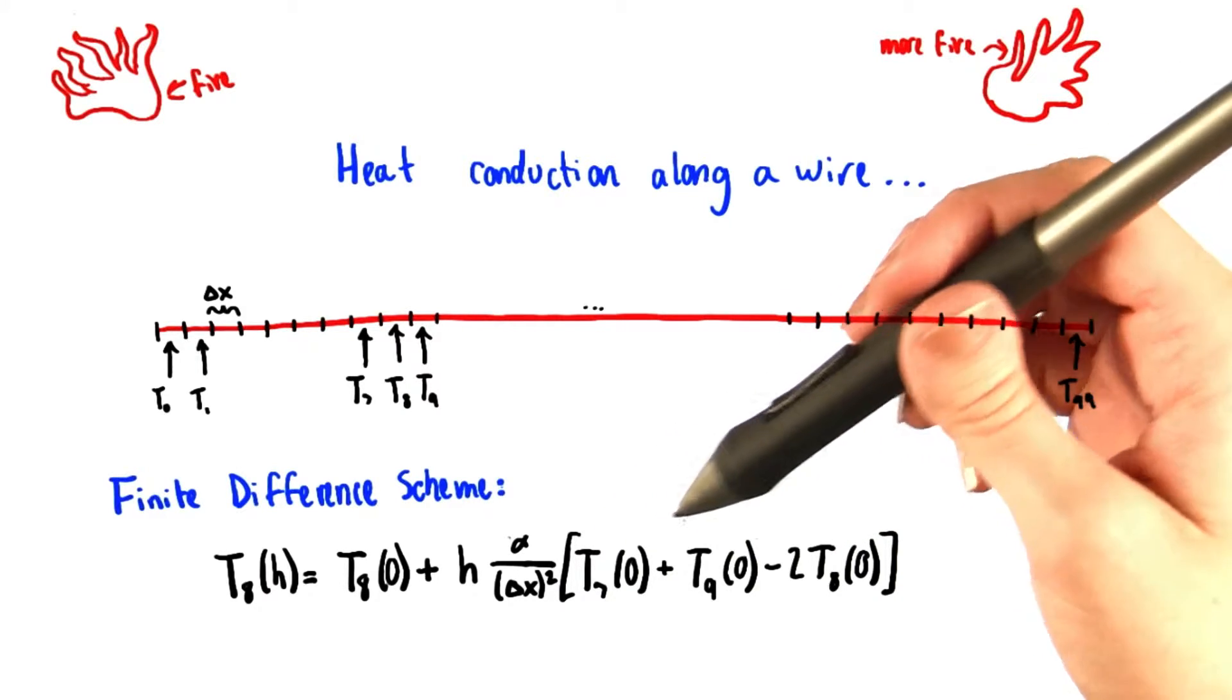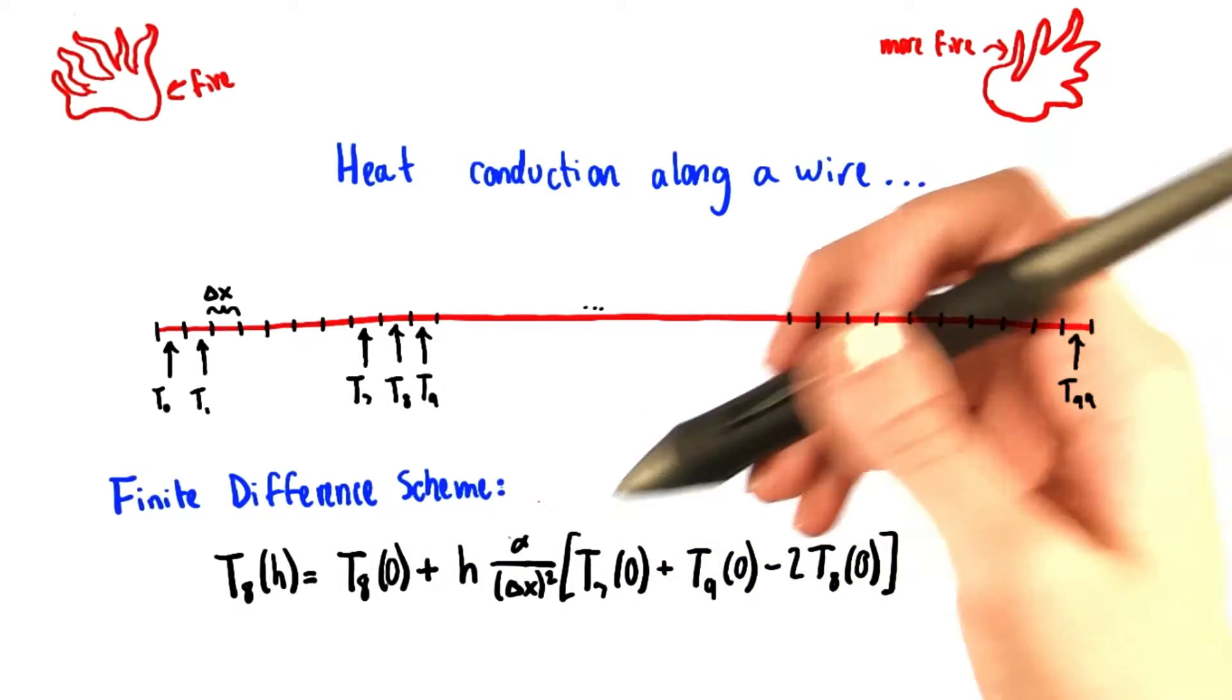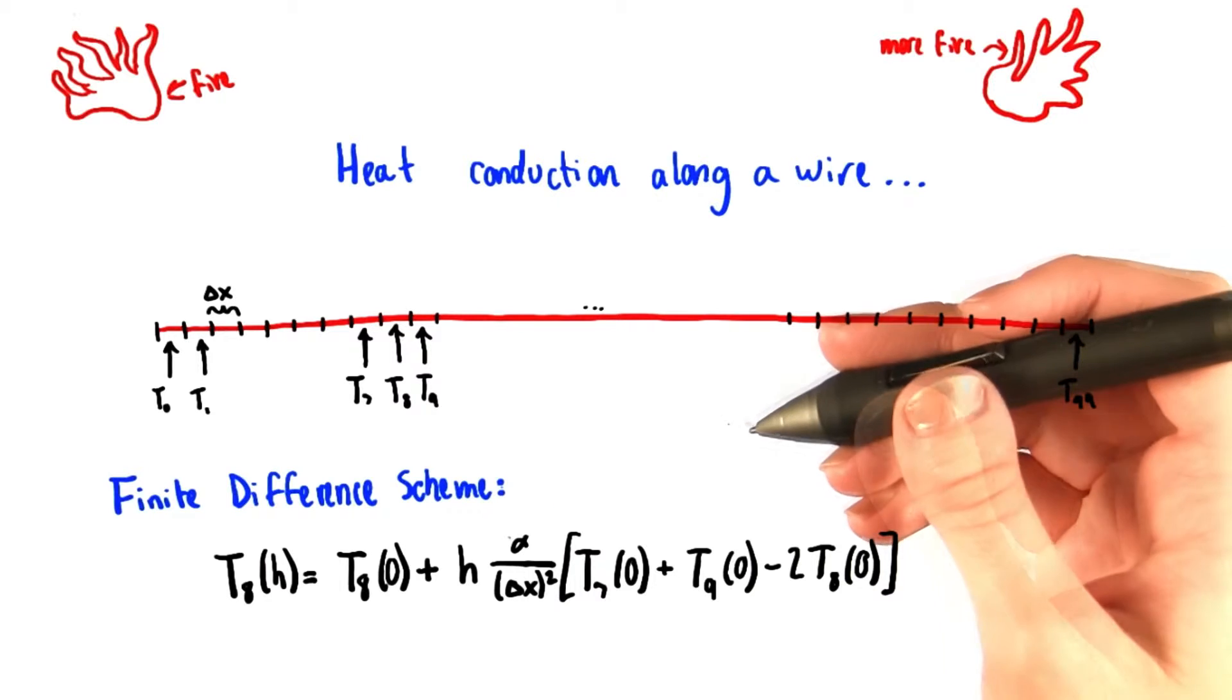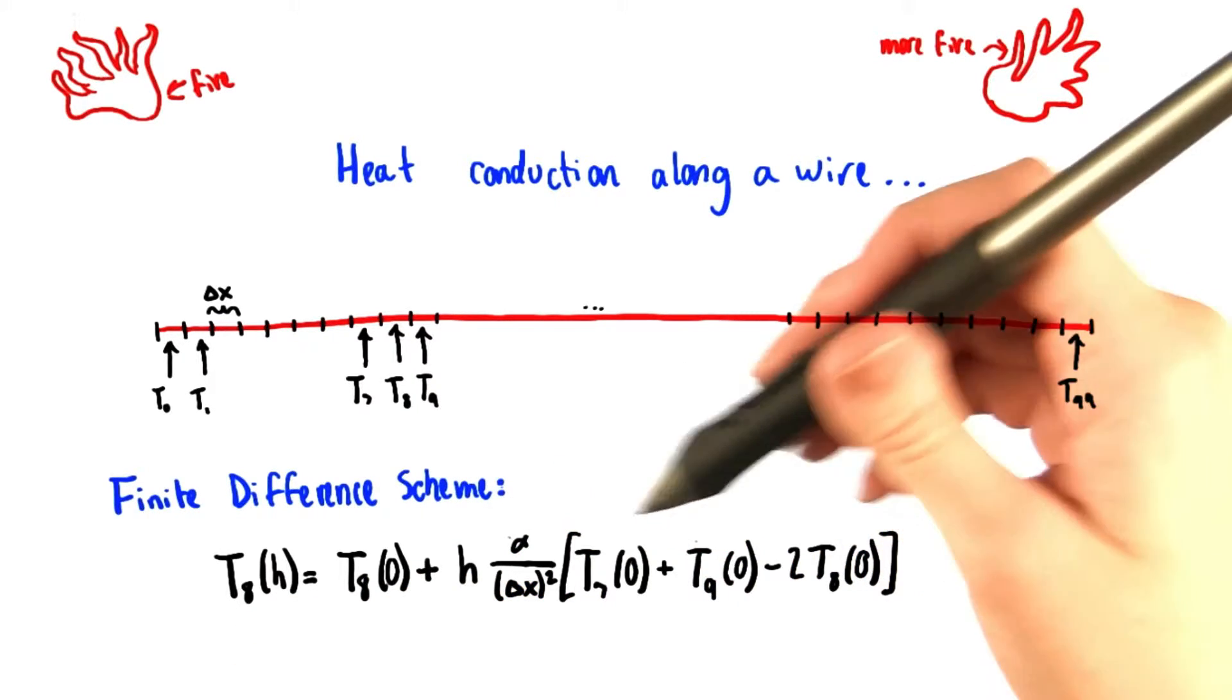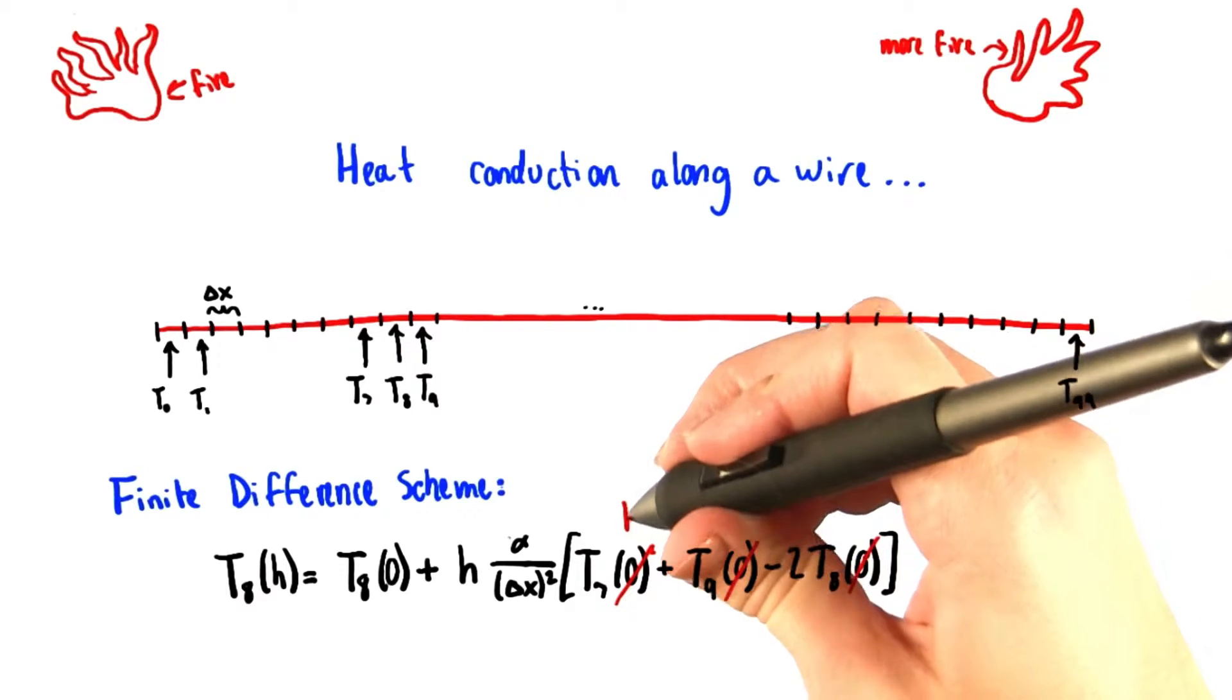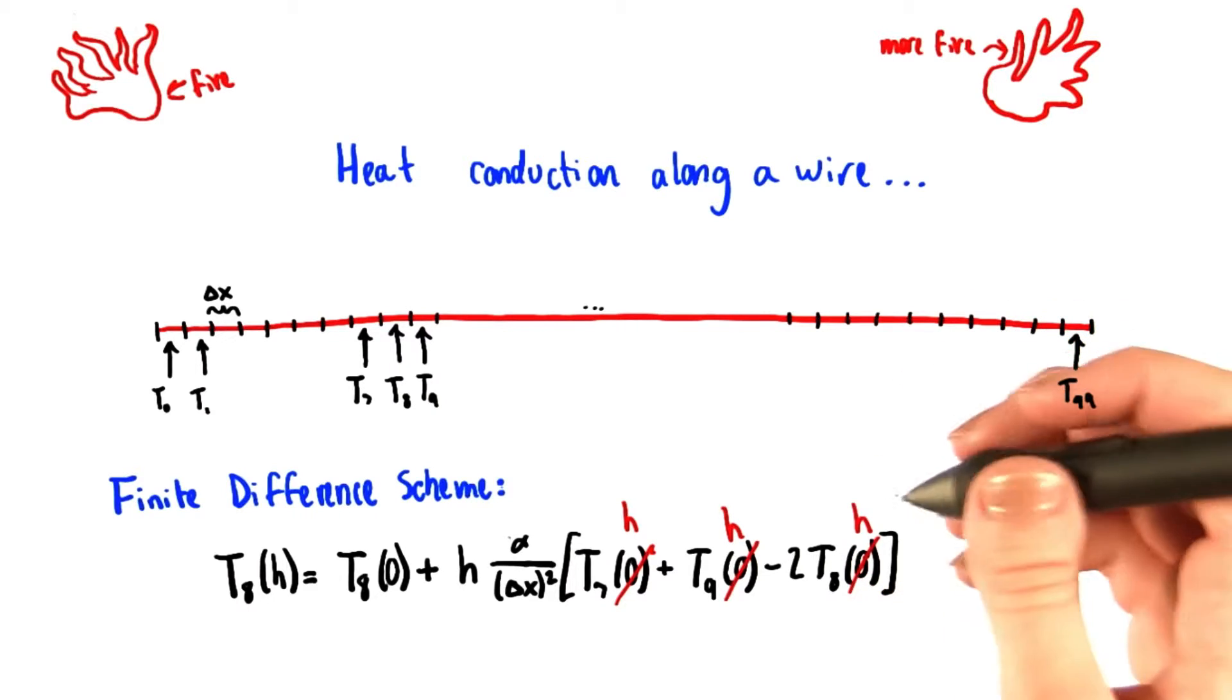This is obviously an explicit method for calculating T8 at time h. But just for a change of pace, since this is a pretty unstable solution, we're going to try an implicit method instead. Remember that implicit means that you're going to have this term over on this side as well. So we're just going to switch all of these zeros to h's. You're going to use this implicit method, of course converting it to code, in this problem.